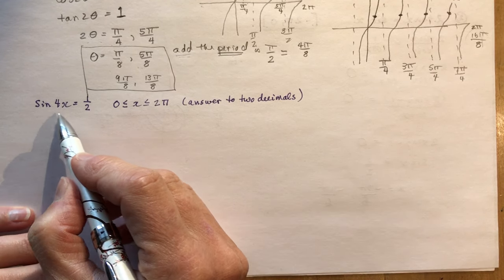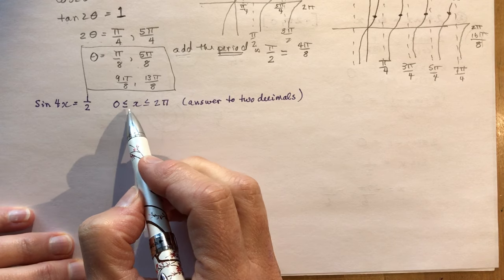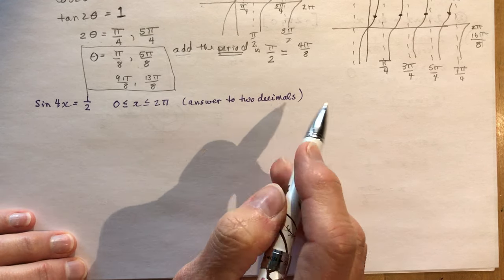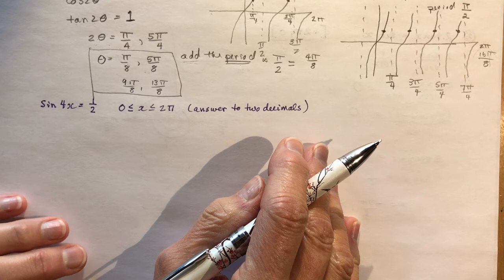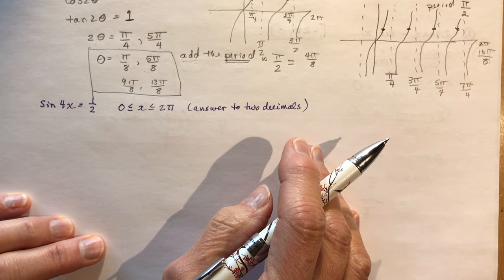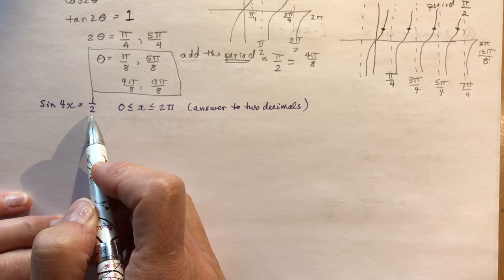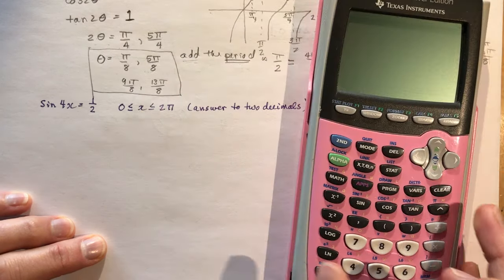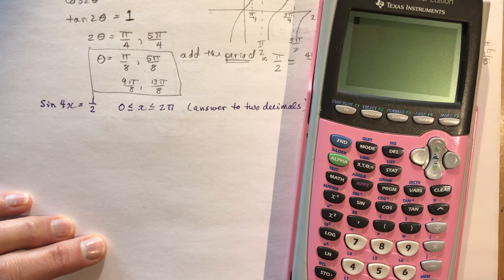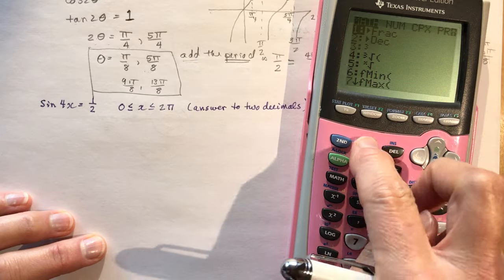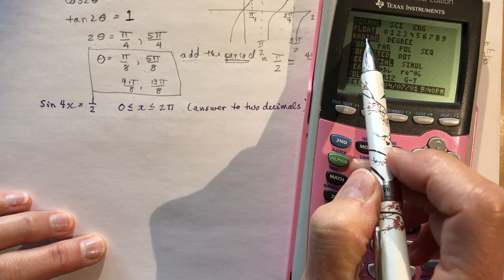Okay, nice one. Sine 4x equals to a half, where x is between 0 and 2π. Answer to two decimals. Okay, this is read out of your textbook. So instead of giving me the answer of π over 6 for sine x equal to a half, I need to use my calculator. So let's go here. So make sure you're in the right mode here, right? Mode radians. Okay, always double check that. It's a big problem if you don't.